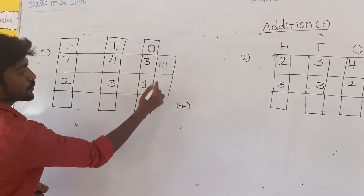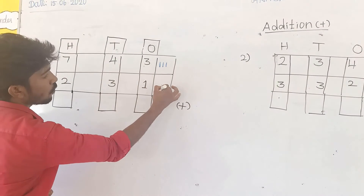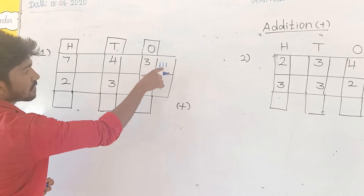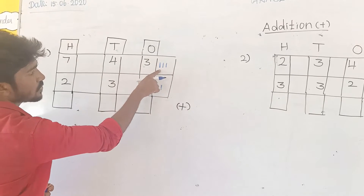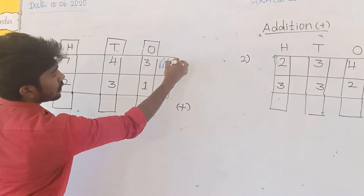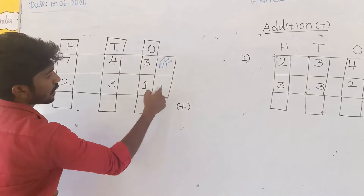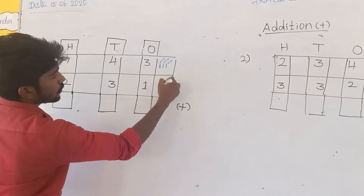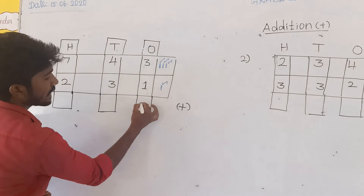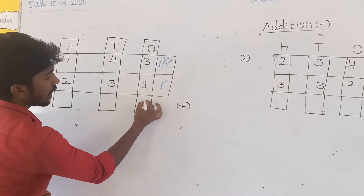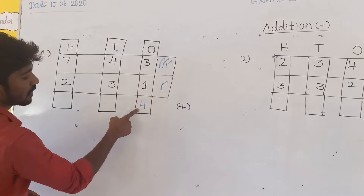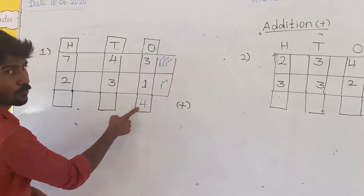The second value is 1, so I draw 1 line here. Now add these lines: 1, 2, 3, and 1 more. So 3 plus 1 equals 4. Write 4 here.